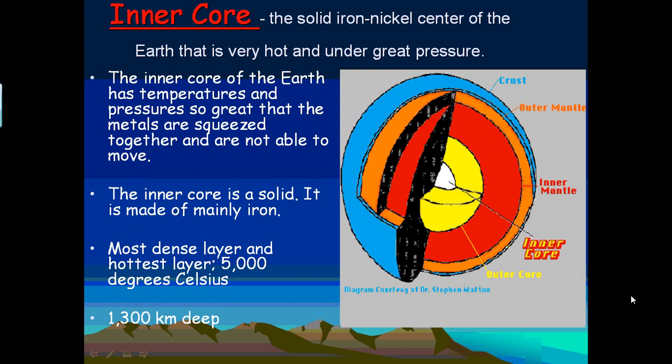The inner core is solid due to the extreme pressure of the other layers pressing down on it. It is made mainly of iron, with some nickel. It is the most dense and hottest layer at 5,000 degrees Celsius. The inner core is 1,300 kilometers deep.